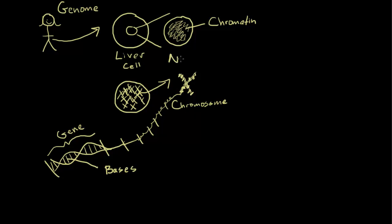So now we have all of the levels of organization. I forgot to label my nucleus, but it should be there. We've started with a cell, we took out its nucleus, inside the nucleus we found chromosomes, inside of chromosomes we found genes, and inside of genes we found bases. This is the hierarchy of organization within DNA, and you'll need to know it.